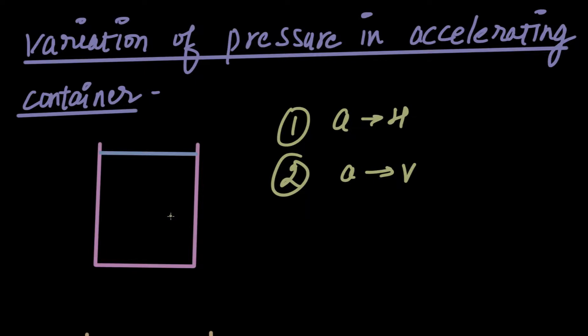Let's understand how the pressure varies when the container is accelerating. This case is very different from when the fluid flows. In this case, fluid is not flowing — it is stationary inside the container, but the container is accelerating.